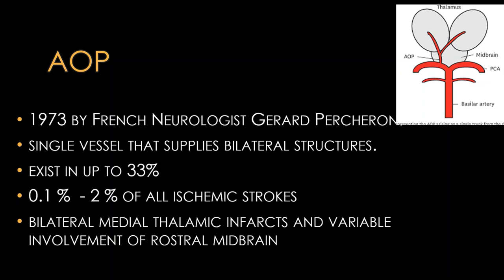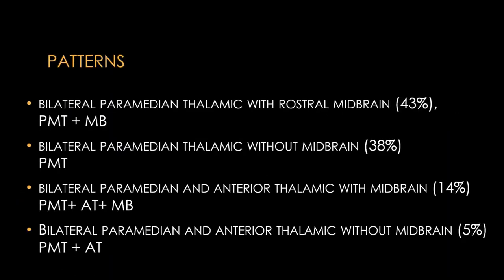Bilateral medial thalamic infarcts are the most common presentation, with variable involvement of the rostral midbrain. The four patterns of Artery of Percheron infarct are: bilateral paramedian thalamus with rostral midbrain (43%); bilateral paramedian thalamus alone (38%); bilateral paramedian and anterior thalamus with midbrain when the polar artery is absent (14%); and bilateral paramedian thalamus alone in about 15%.